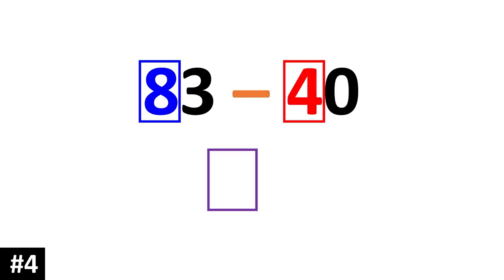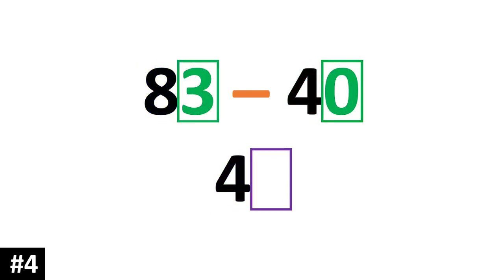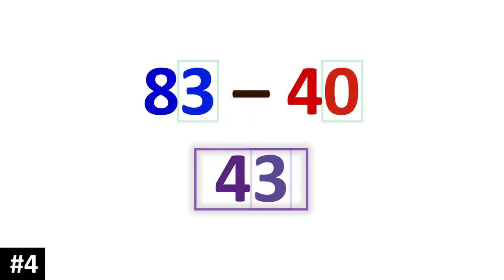8 10s minus 4 10s is 4 10s. We look to the ones: 3 minus 0 is 3. So our answer is 43.